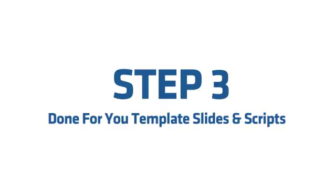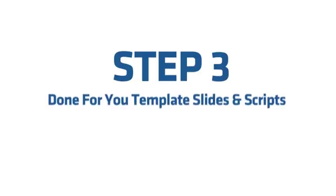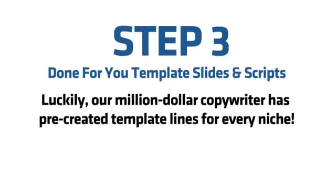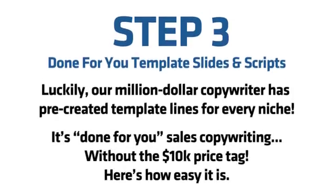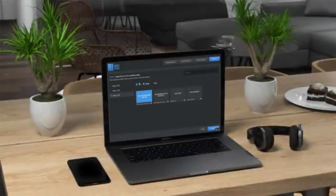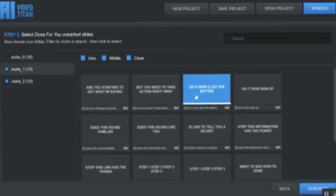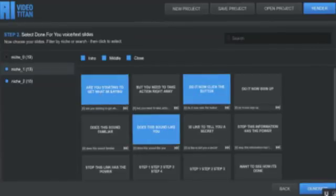Step 3: Done-for-you template slides and scripts. Now that you've chosen your niche, it's time to build your script. Our million-dollar copywriter has pre-created template lines for every niche — done-for-you sales copywriting without the $10,000 price tag. Start by choosing the intro, middle, and closing slides, then click on the template lines you want to add. There are dozens of lines for each method and hundreds of high-converting slides in total, so the possible combinations are endless.